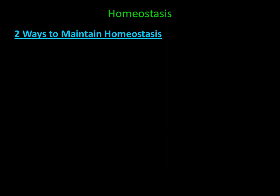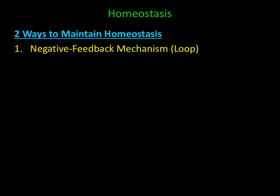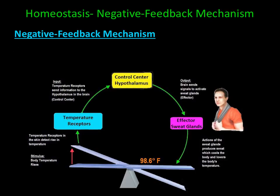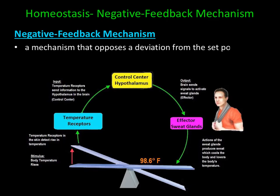There are two mechanisms which help maintain homeostasis. The first mechanism is a negative feedback mechanism, and the second is a positive feedback mechanism. A negative feedback mechanism is a mechanism that opposes a deviation from the set point. It is the most common regulation mechanism to help maintain homeostasis.